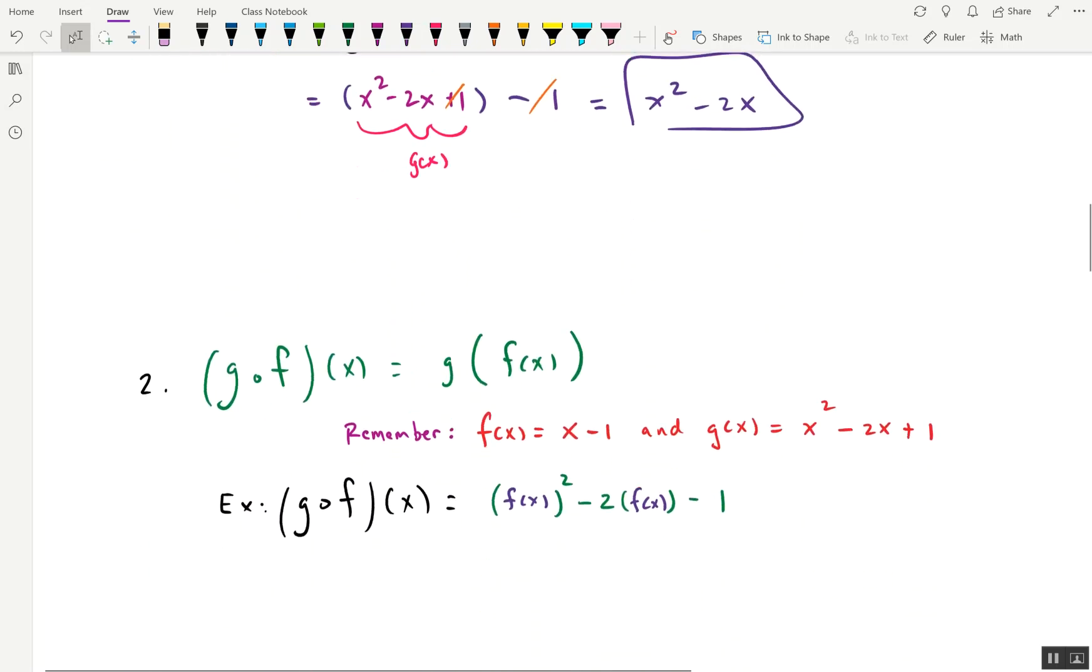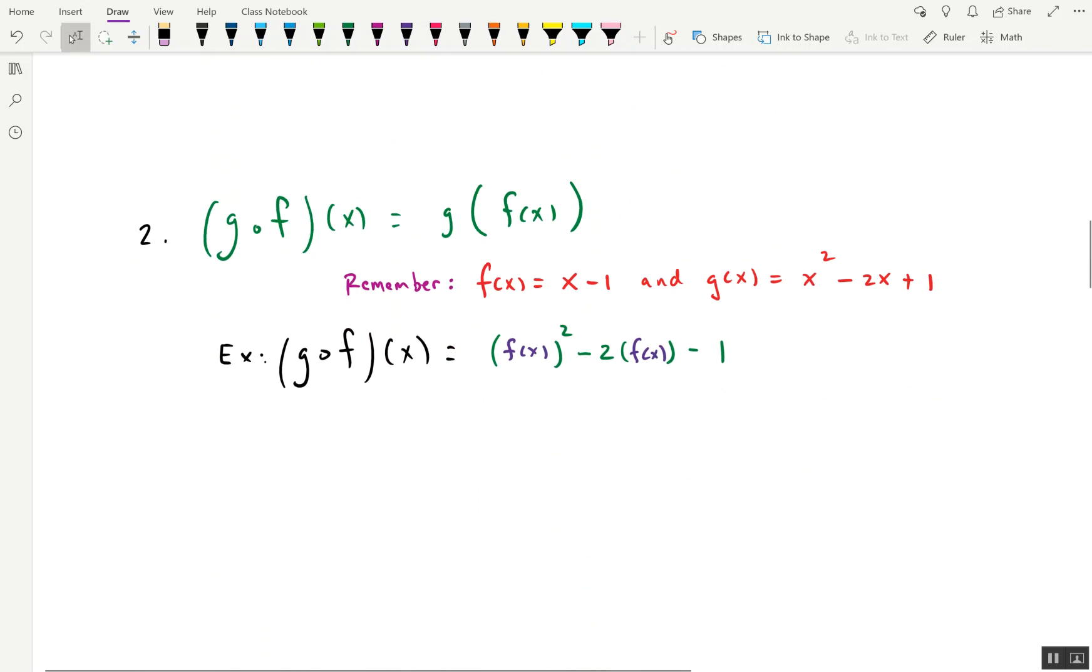How about we do the other way around? How about we do g of f? So now we are plugging in f as an input into g. So well, what is g then? g, we said was over here, x squared minus two x plus one. So we have something squared. Again, this is f minus two something times something. Again, that's f minus one.